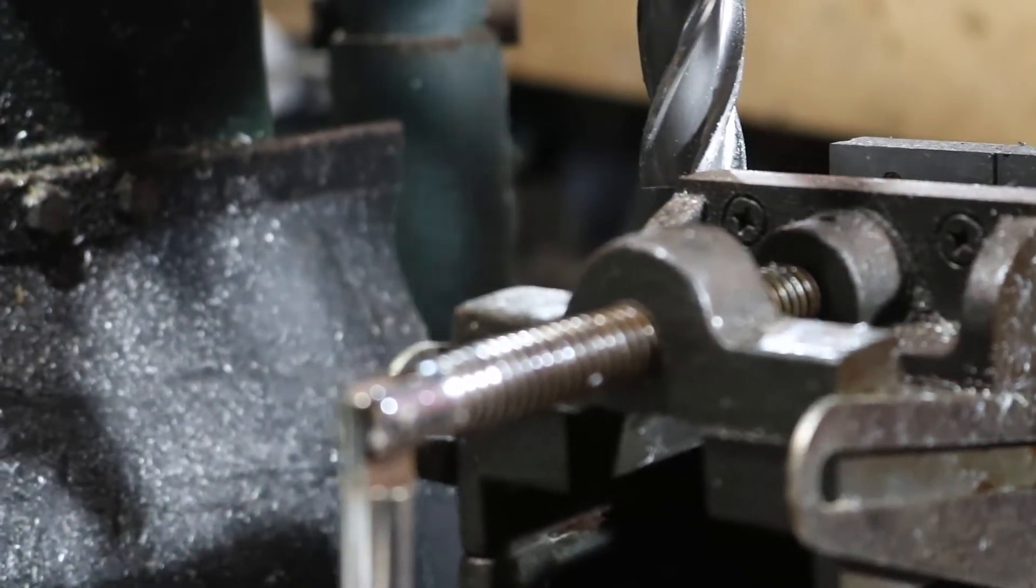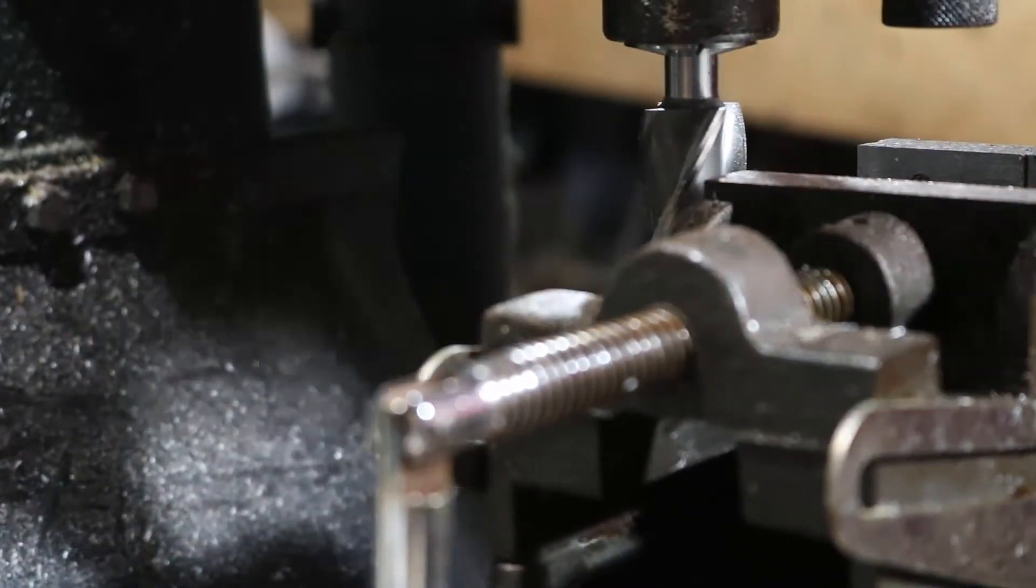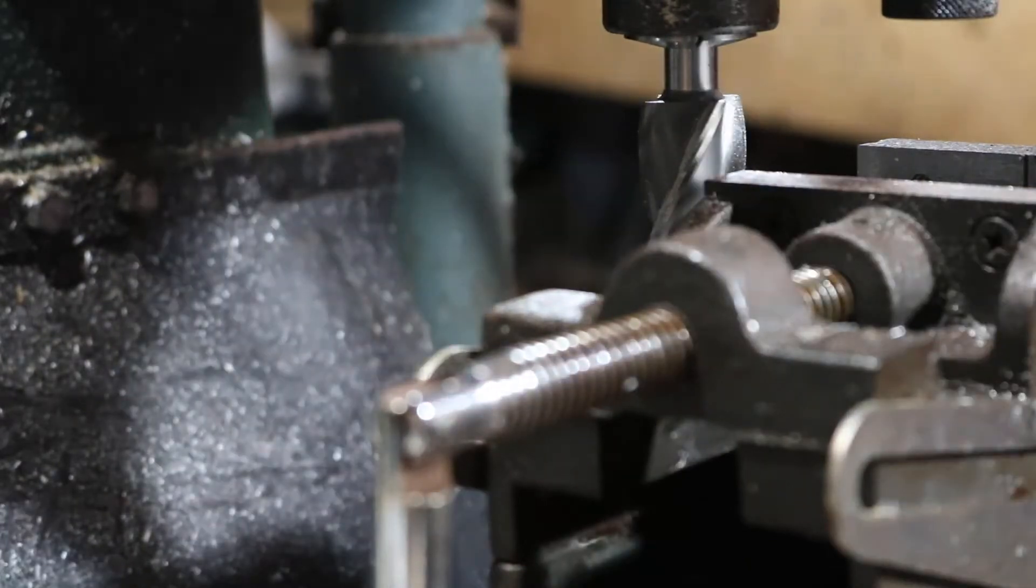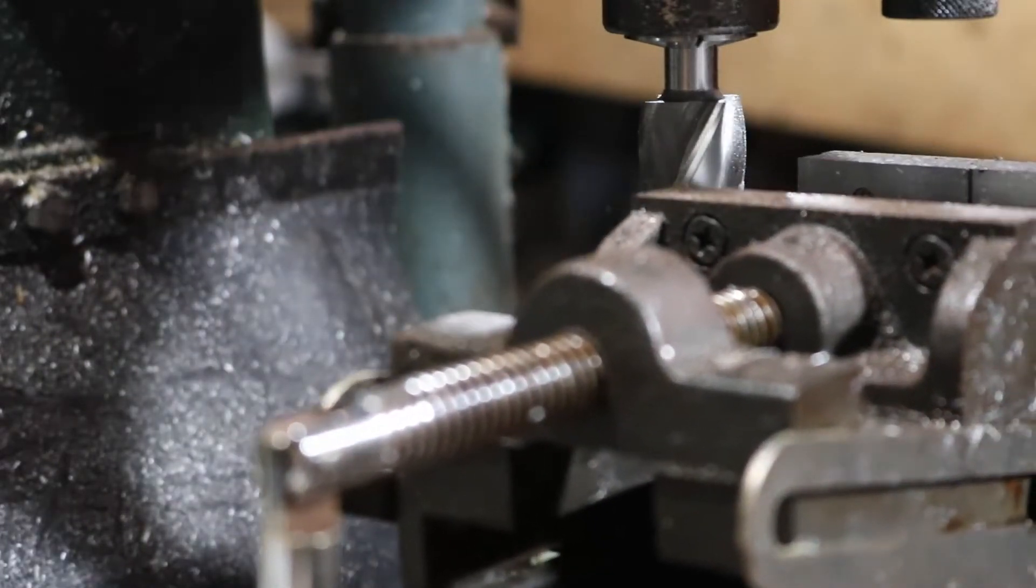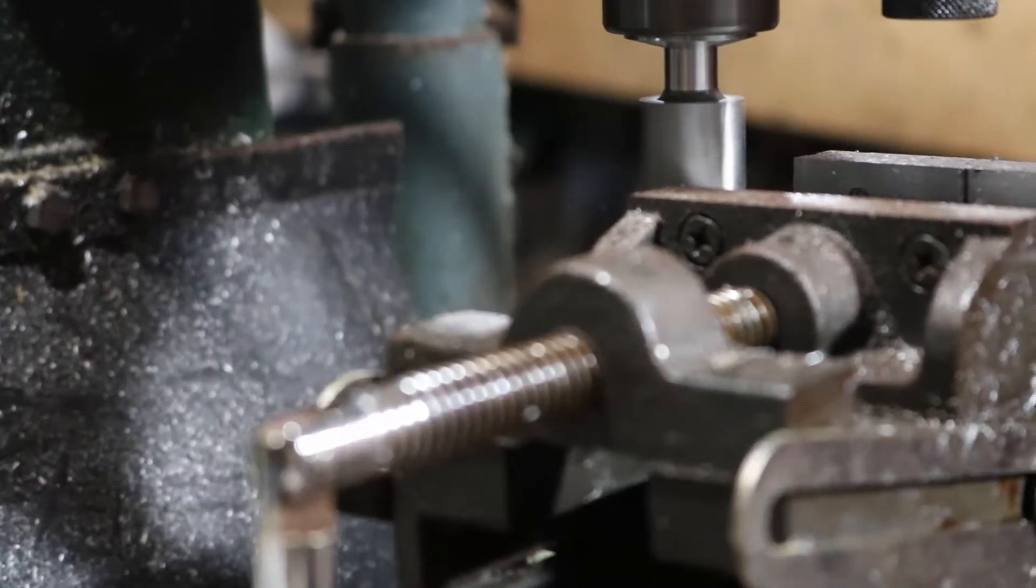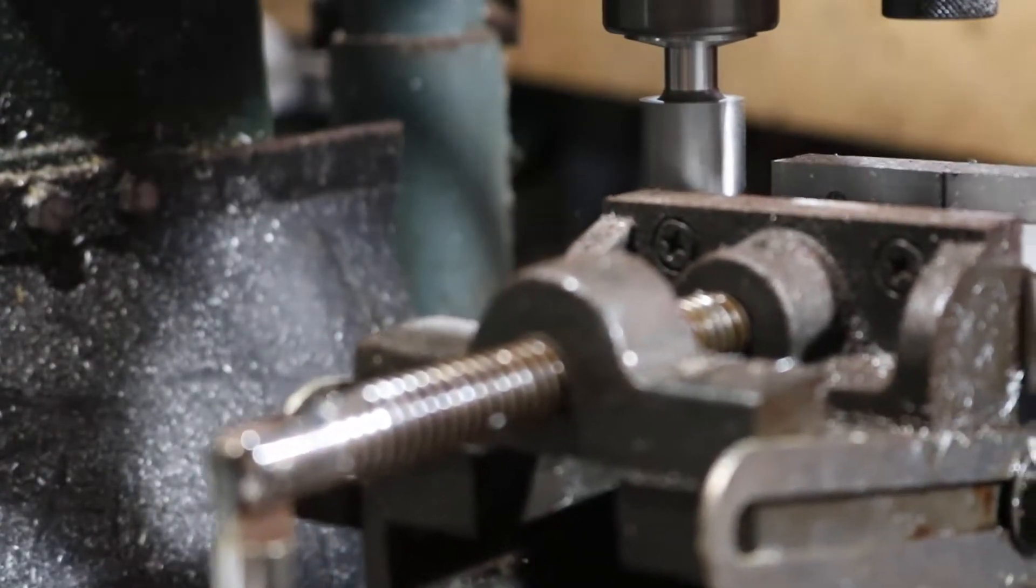You won't be able to see the back end very much but it's exactly the same process as machining the other one. The only difference is I'm going to have to take a little bit more material off because I also want to machine it to length at this point.